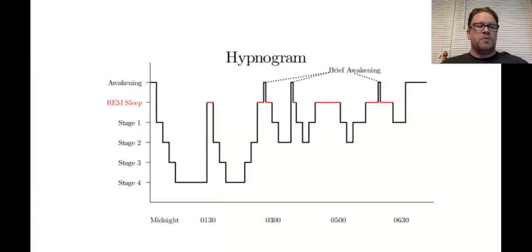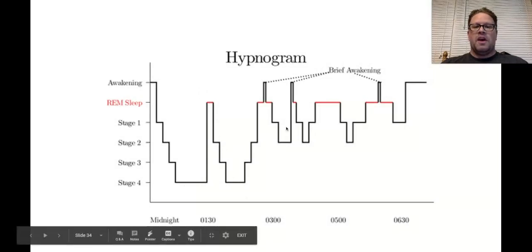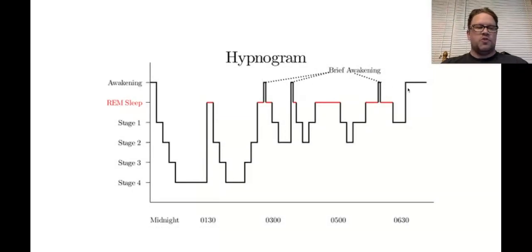Deprivation of REM sleep is also associated with what's called REM rebound, which are increased amounts of REM sleep after being deprived of REM sleep on earlier nights. REM rebound may actually represent an adaptive response to stress in non-depressed individuals by suppressing the emotional importance of aversive events that occurred while awake. If you're not getting enough REM sleep, then the time that it takes you to get to REM sleep actually shortens and you spend more time in REM.